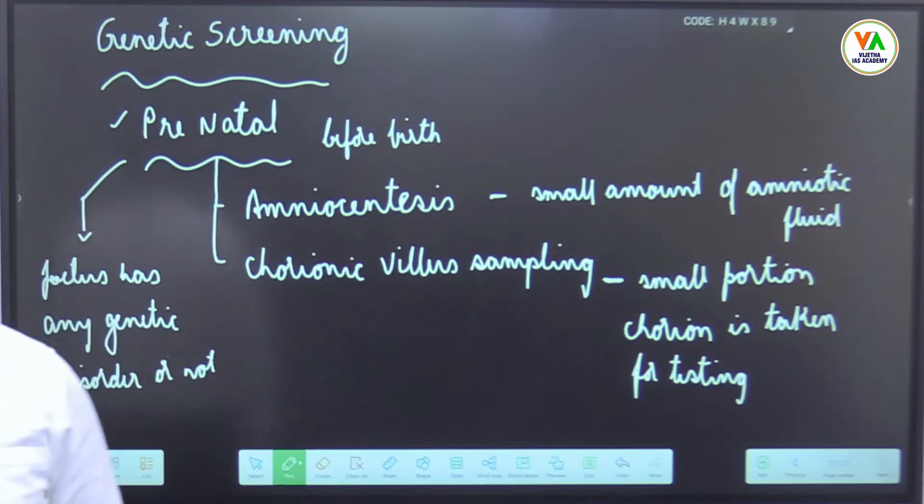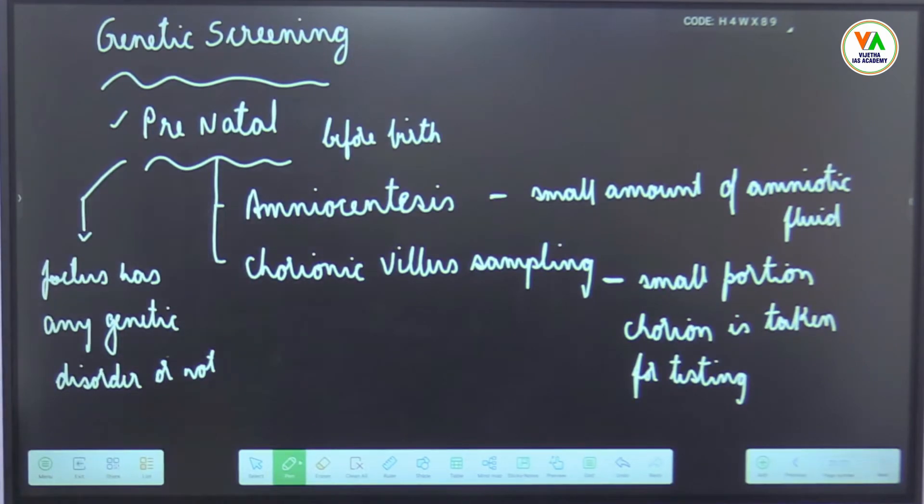Prenatal testing is done before birth either by means of amniocentesis or chorionic villus sampling. In amniocentesis method, a small amount of amniotic fluid is drawn and tested. In chorionic villus sampling, small portion of chorion is taken for testing. This prenatal testing helps us to find if the fetus has any genetic disorder or not.